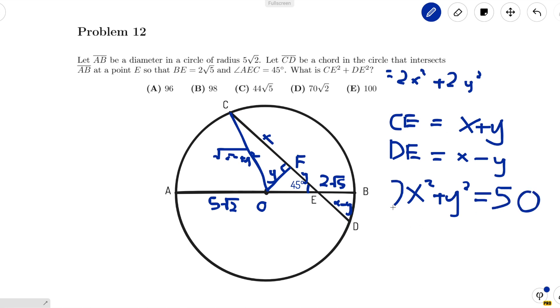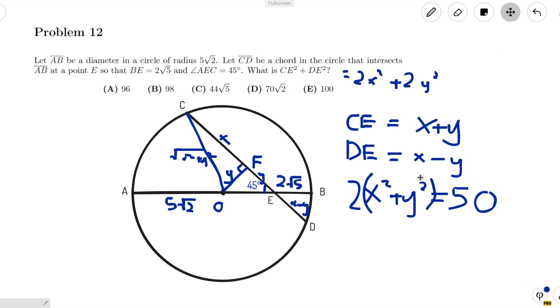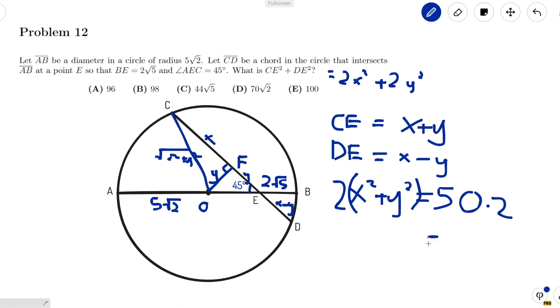So that means 2 times that is just 50 times 2, or 100. Looking at our answer choices, 100 is E. So we circle E and we're done.